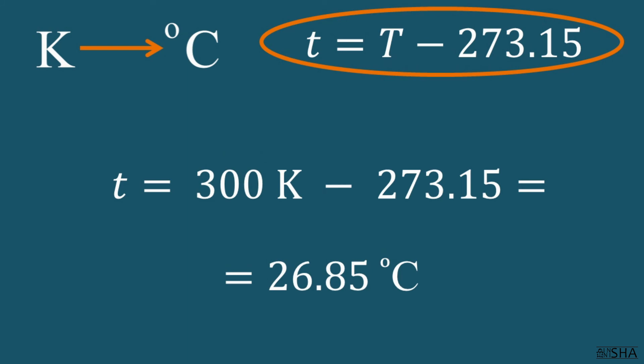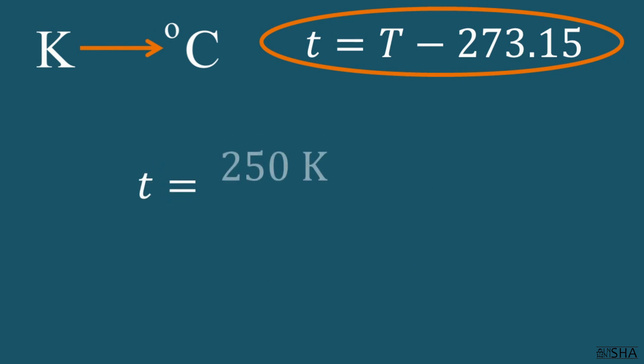You can use 273 at once. Look, convert 250 Kelvin to degrees Celsius. t (small) equals 250 minus 273, it is negative 23 degrees Celsius.